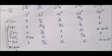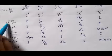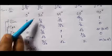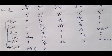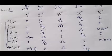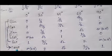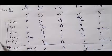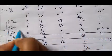For cosec, since cosec is the reciprocal of sin: sin 0 is 0, so cosec 0 is infinity — not defined. Sin 30 is 1 by 2, so cosec 30 is 2. Sin 45 is 1 by root 2, so cosec 45 is root 2. Cosec 60 is 2 by root 3, and cosec 90 is 1. So these are all the values for cosec, sec, cot, tan, cos, and sin.